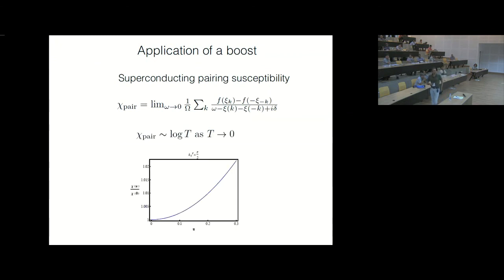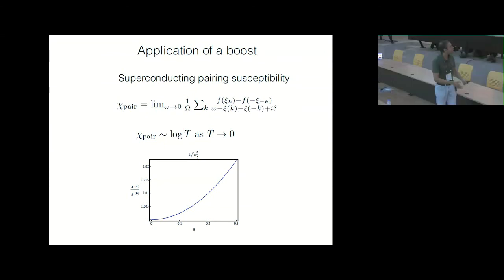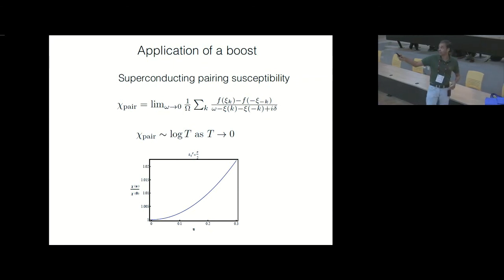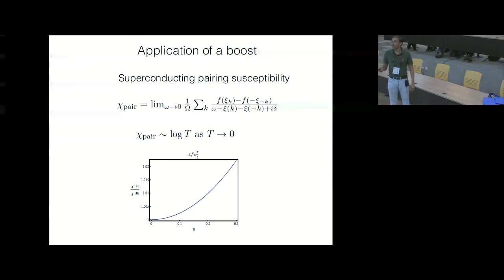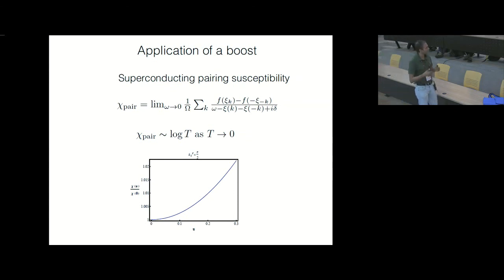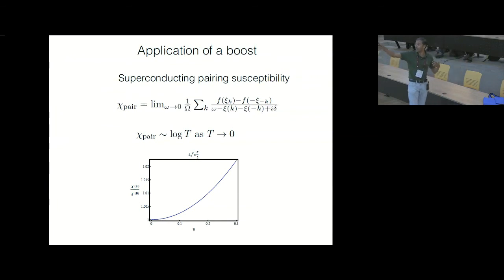In case it seems surprising, one way to see that this makes sense is to calculate the superconducting pairing susceptibility for this kind of dispersion with the cosine dispersion. What you find is that the ratio of the susceptibility with a boost divided by without a boost increases as you increase the boost, which tells you that the system becomes a better and better superconductor. So this is something you can calculate just with the 1D -2t cos(k) dispersion and see that the result from bosonization makes sense.